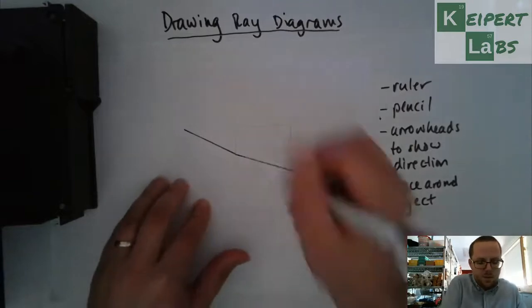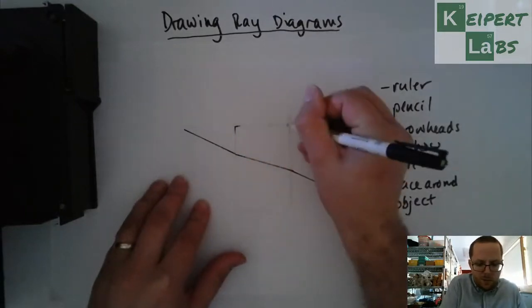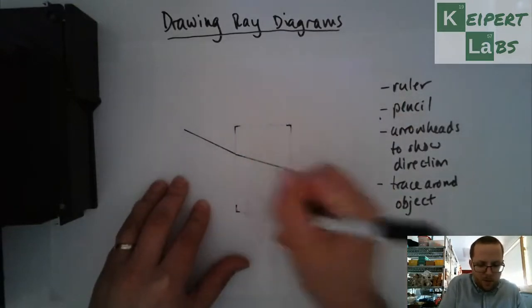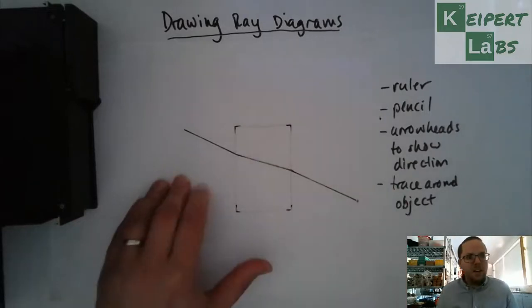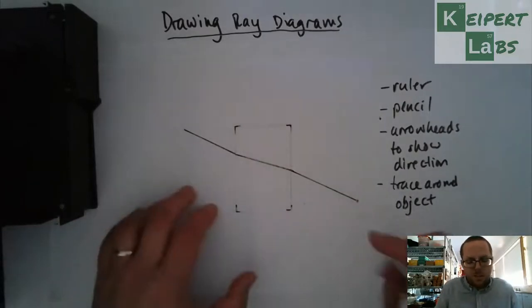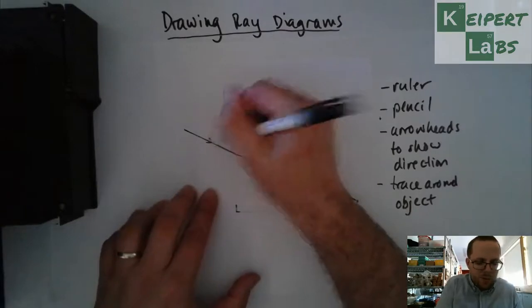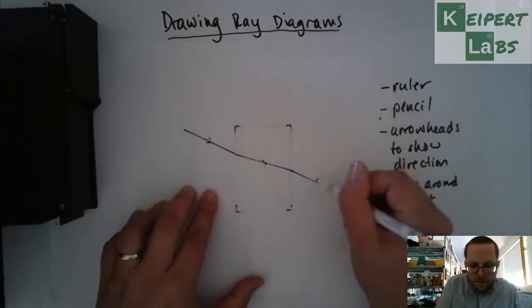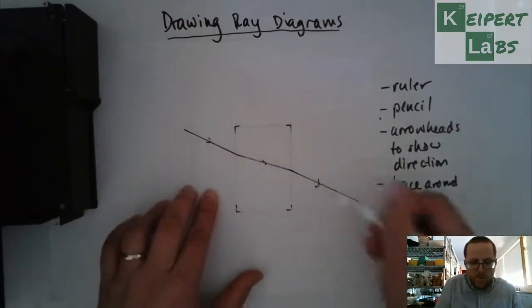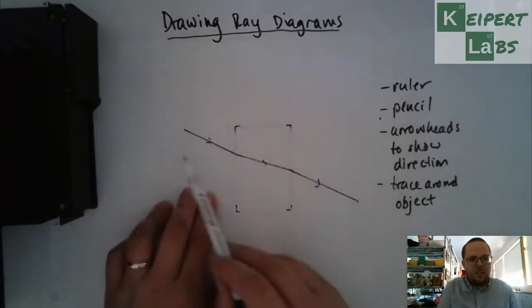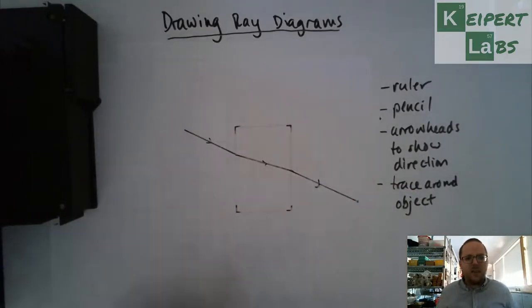So, now this is the corner of my perspex, corners of my perspex block. I'm not going to trace around it at the moment because I've done enough of that. But that's so you can kind of see where that goes. And then I'm going to use my arrowheads to show direction to show that it was traveling from the left-hand side through the block and then out the right-hand side.